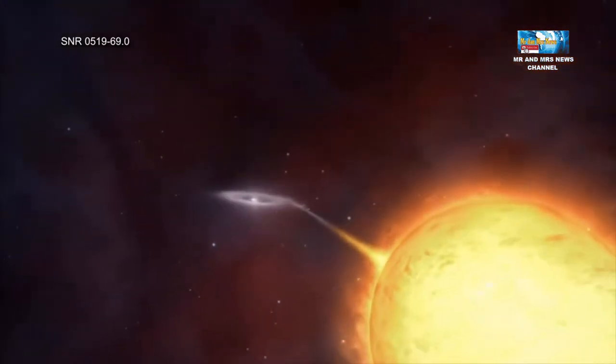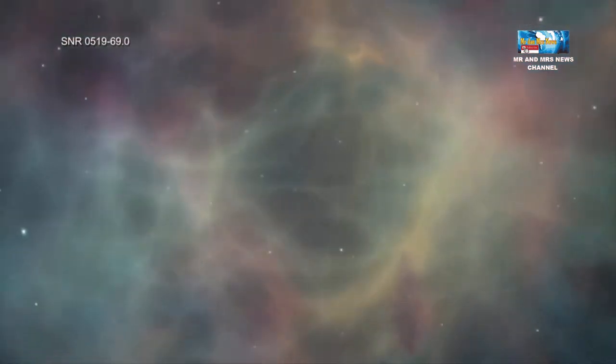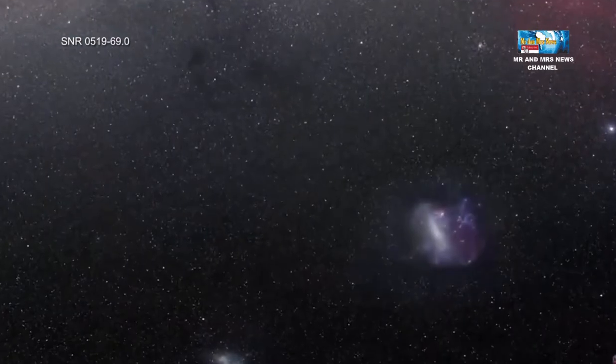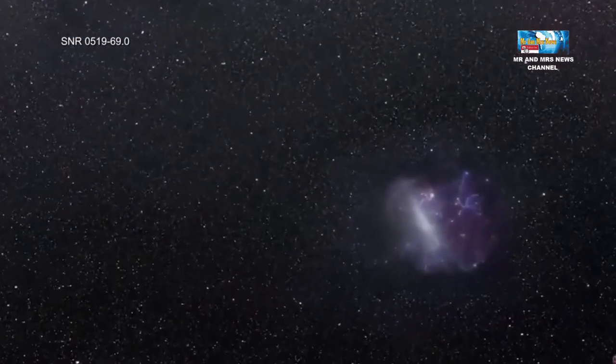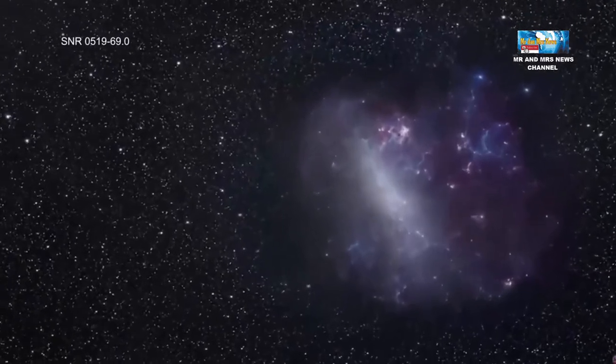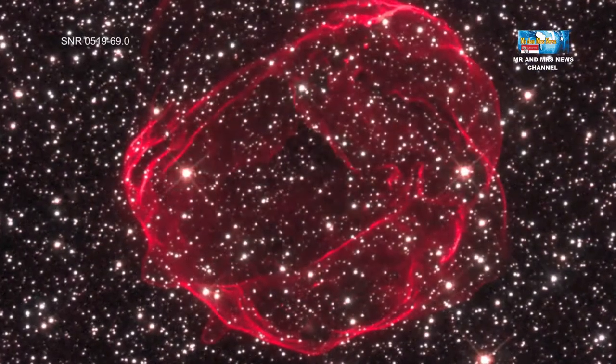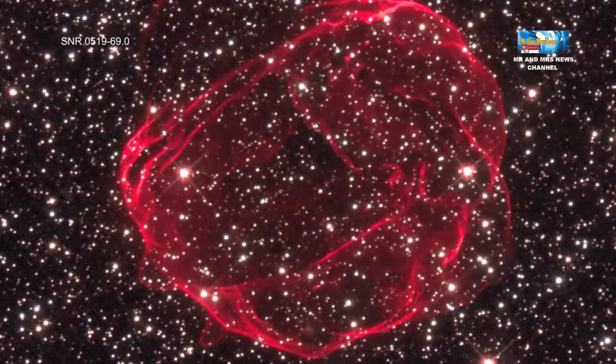Gambar komposit ini menunjukkan data sinar-X dari observatorium sinar-X Chandra NASA dan optik dari teleskop luar angkasa Hubble NASA. Sinar-X dari SNR0519 dengan energi rendah, sedang dan tinggi masing-masing ditampilkan dalam warna hijau, biru dan ungu, dengan beberapa warna ini tumpang tindih sehingga tampak putih.